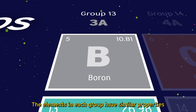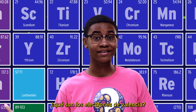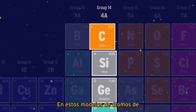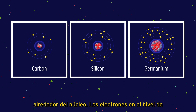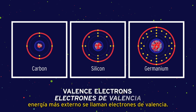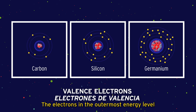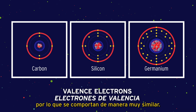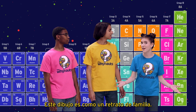Los elementos de cada grupo tienen propiedades similares porque todos tienen el mismo número de electrones de valencia. What are valence electrons? Well, let's take a closer look at a few elements in the same group. In these models of carbon, silicon, and germanium atoms, we can see the protons and neutrons in the nucleus, and electrons at different energy levels around the nucleus. The electrons in the outermost energy level are called valence electrons. Each of these three atoms have four valence electrons, meaning they behave in very similar ways — therefore they're in the same family.